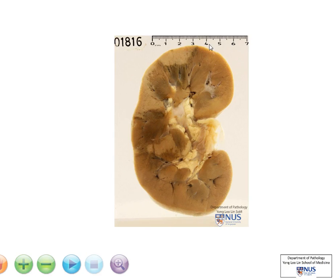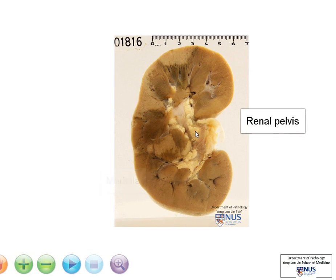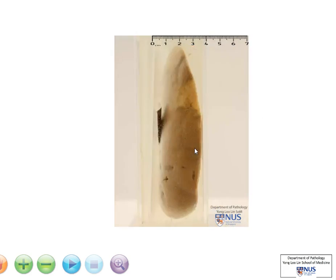Hello, we're looking at a bisected kidney here. This is the renal cortex, the medulla, and the renal pelvis, and the yellowish areas here are adipose tissue.